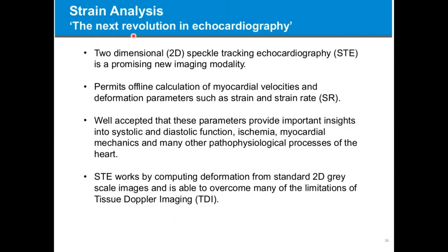Strain analysis is really the next revolution in echocardiography. Two-dimensional speckle tracking is a promising new imaging modality that permits offline calculation of myocardial velocities and deformation parameters, such as strain and strain rate. It is well accepted that these parameters provide important insights into systolic and diastolic function, ischemia, myocardial mechanics, and many other pathophysiological processes of the heart. Speckle tracking echo works by computing deformation from standard 2D grayscale images and is able to overcome many of the limitations of tissue Doppler imaging, which is what is commonly used in the human clinic.